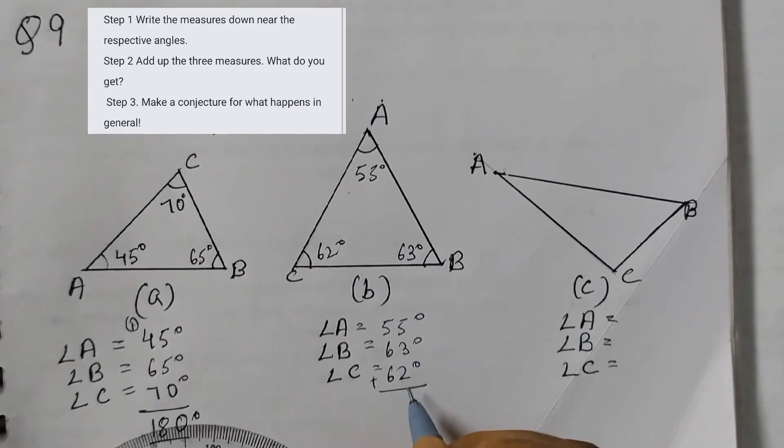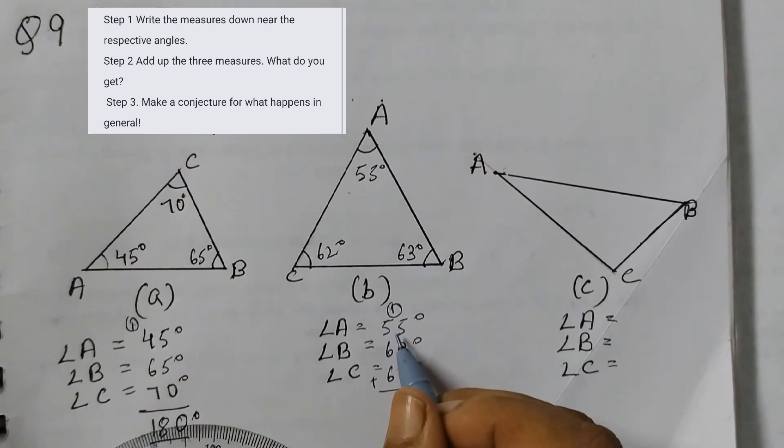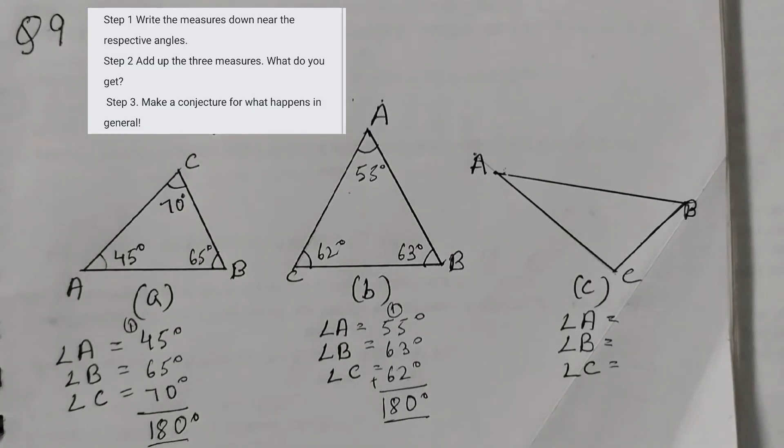Add it up. 5 plus 3 plus 2, 10. 6 plus 5, 11 plus 1, 12 plus 6, 18. We get 180 degrees.